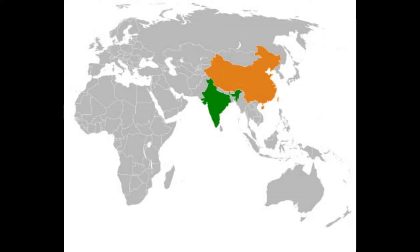We have been learning about the Indus River and the Indus River Valley Civilization, which are both located in the country India, shown in green here on our map. India is part of the continent Asia.